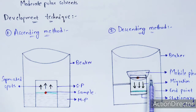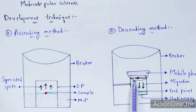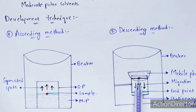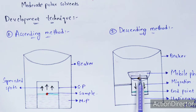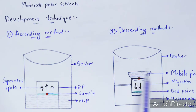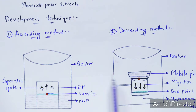In the descending technique, the paper is placed inside a chamber with the start point and end point marked. The sample (red dot) is placed at the start point and the mobile phase (solvent) is at the top. Migration of particles occurs in a downward direction because the mobile phase is present at the top, causing particles to move towards the bottom.